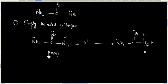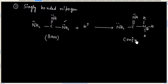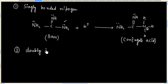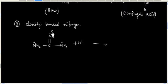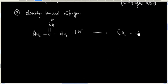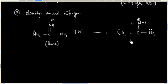Now let us protonate the doubly bonded nitrogen. This is the base and this is the corresponding conjugate acid formed when the doubly bonded nitrogen is protonated.